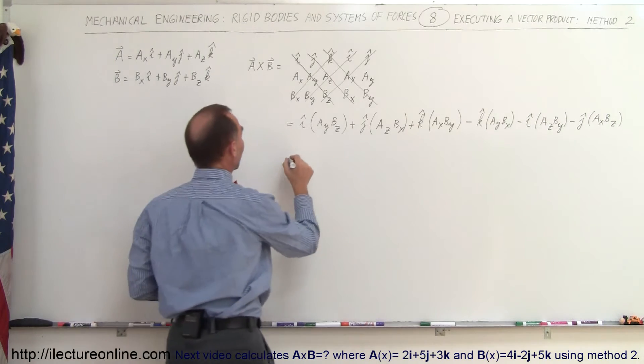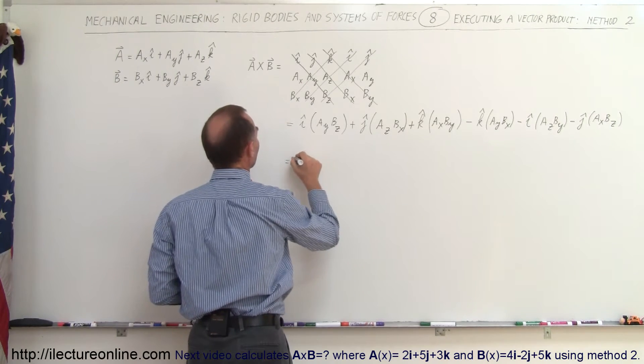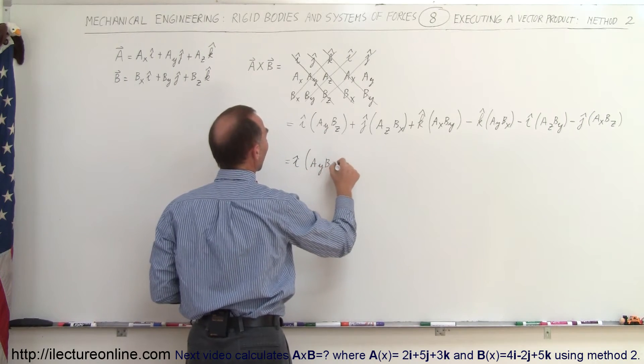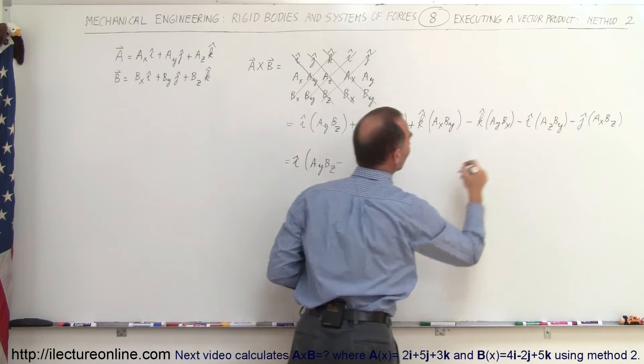So if we combine that, we can then say this is equal to I times A sub Y B sub Z minus A sub Z B sub Y.